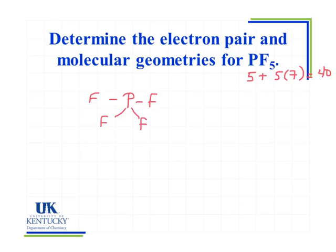So I'm going to draw my skeletal structure all single bonds. Now I've used up 10 electrons, now I'm going to start filling in my octets on each of my fluorines and see how many electrons I have used after I've done that.